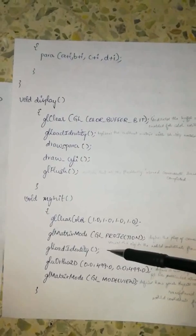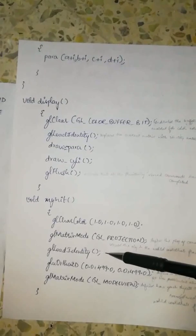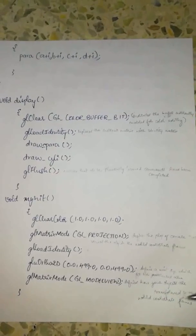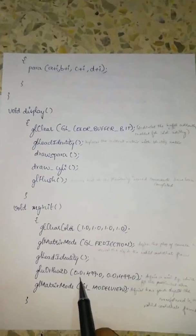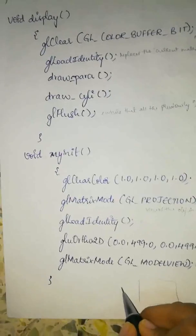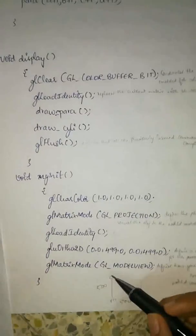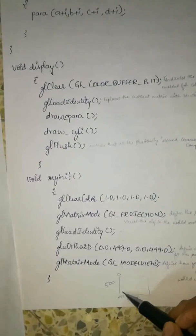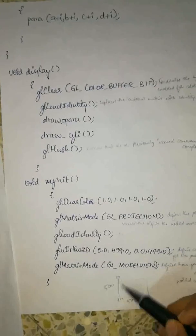GL_MATRIX_MODE(GL_MODELVIEW) defines how your objects are transformed in the world coordinate frame — transformed meaning any kind of transformation such as rotation, scaling, translation or shearing. gl_load_identity replaces the current matrix with the identity matrix. gluOrtho2D defines a unit system that fits into that particular area. The area given is (0.0, 499.0, 0.0, 499.0), which means if your window size is 500×500, it will start from 0 and extend up to 499, giving you 500 values from 0 to 499.